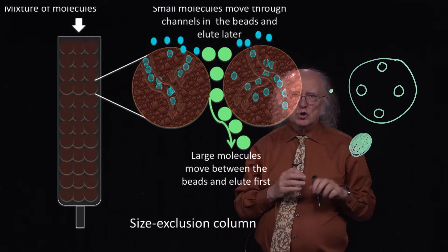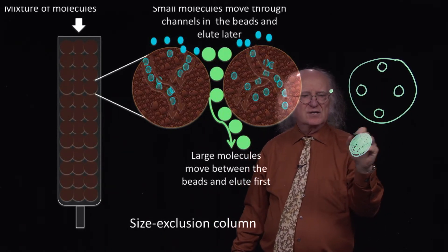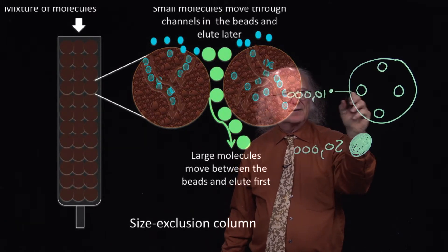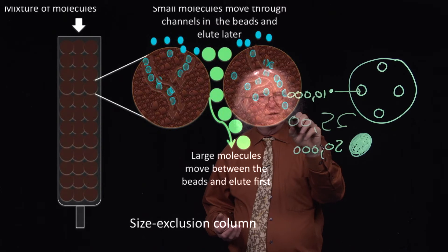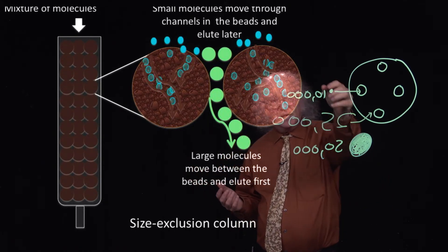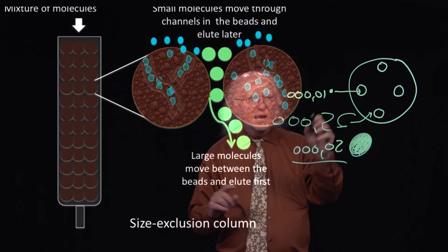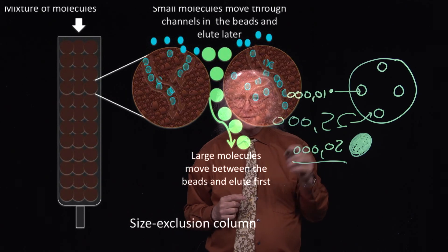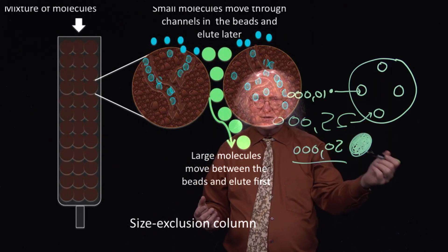These holes define what we call the exclusion limit — they're a fixed size. We can choose beads with an exclusion limit that might, for example, exclude something of 50,000 in molecular weight or higher, but allow something of 10,000 in molecular weight or lower to fit. With a 25,000 exclusion limit, we could separate those two molecules: the 50,000 molecular weight molecule would come out of the bottom of the column first, and the 10,000 molecular weight molecule, because it traveled a very contorted path through the column, will come out last. So molecular exclusion chromatography separates on the basis of size — the smallest molecules come out last, the largest molecules come out first.